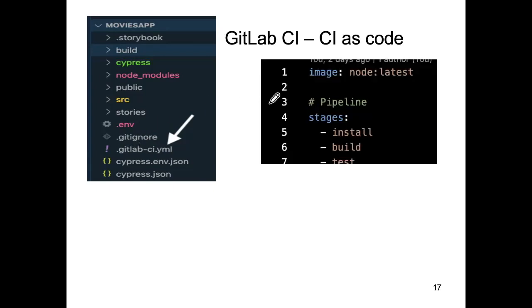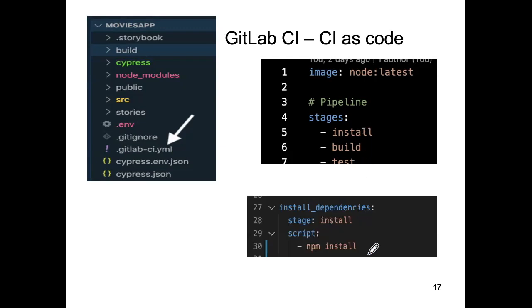What GitLab will see inside the file is the part that describes what the different stages in this pipeline are. In my case there are three stages. Then, if it wants to see what jobs are inside a particular stage, it looks further down in the file and might find something like this — one job in a particular stage. You can work out what stage this job is related to: it looks like it's linked to the install stage.